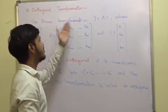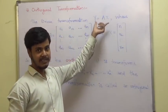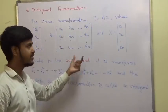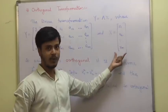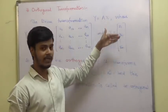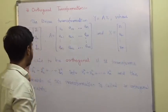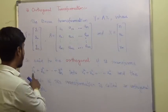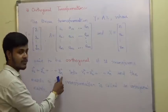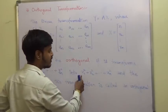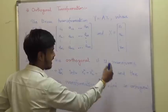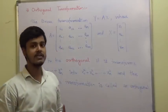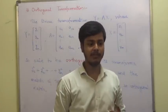A linear transformation y = Ax, where y is a column vector, A is a square matrix, and x is also a column vector containing elements x1, x2, ..., xn. It is said to be orthogonal if it transforms y1² + y2² + ... + yn² into x1² + x2² + ... + xn². The matrix of this transformation is called an Orthogonal Matrix.